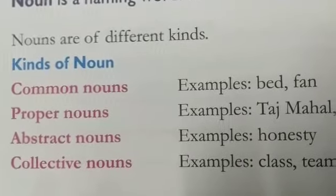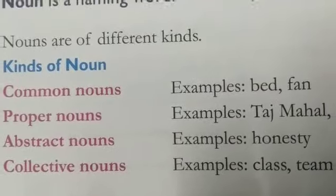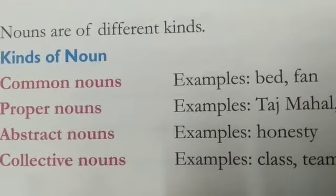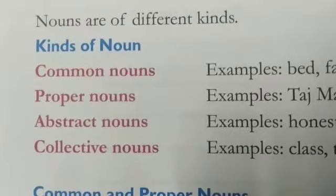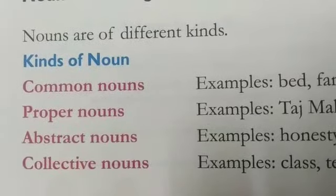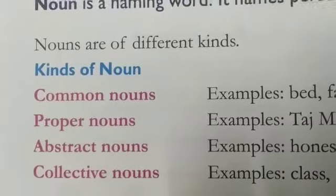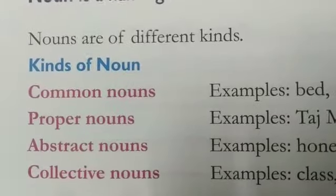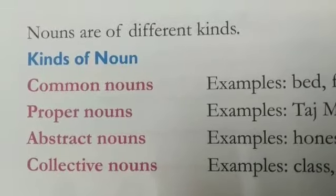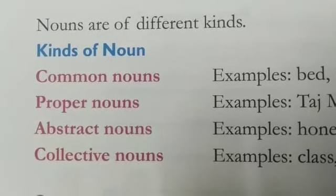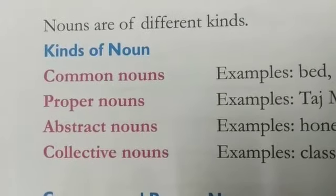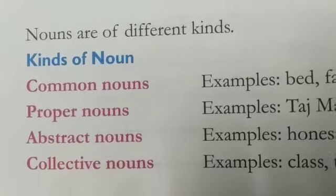Abstract noun क्या होते हैं — जिस word से हमको extra feelings दिखती हैं, जैसे कि happy, sad — इस type के जो word होते हैं, वो सब हमारे abstract noun में आते हैं। And collective noun में क्या होता है — collective में जो group of words के लिए word use होता है, उसको बोलते हैं collective noun। जैसे bunch, class, group, crowd — ऐसे जो word हैं, वो सब collective noun में आते हैं।